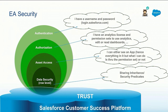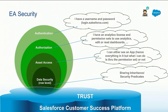Now that we have covered the layers of security, the two common ways to address row-level data security are either through sharing inheritance or through security predicates.